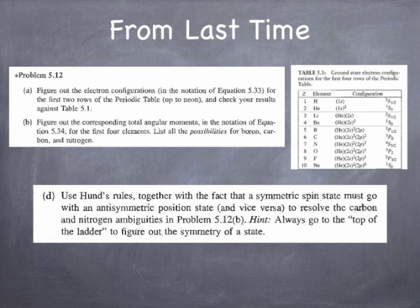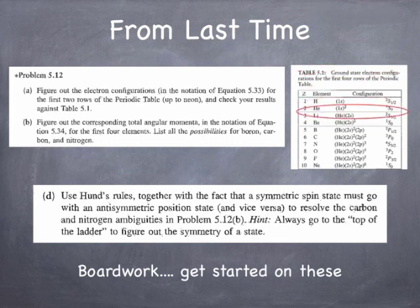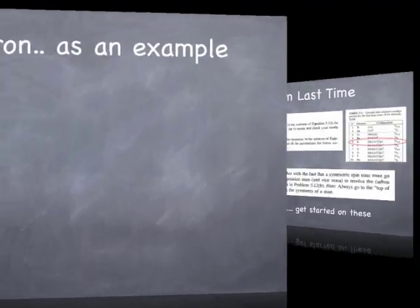We worked out the term symbols for the first four because they're trivial. They only involve s states in which L is equal to zero, and so all you have is s, and it's quite obvious how those have to add up. The first really interesting case is boron. So I want to treat boron as an example, but carbon and nitrogen we'll work out in class today in detail at the board.